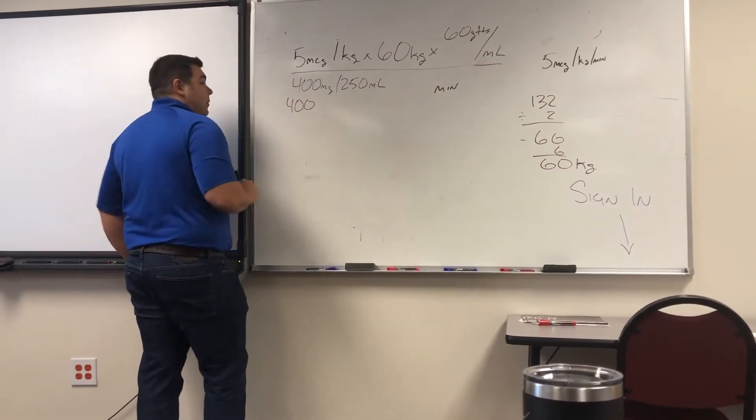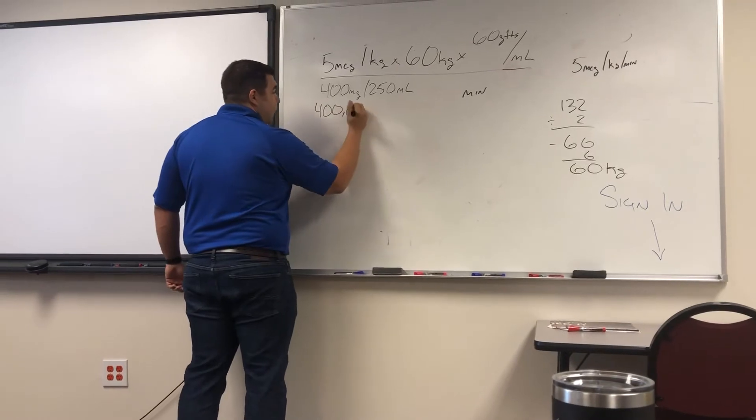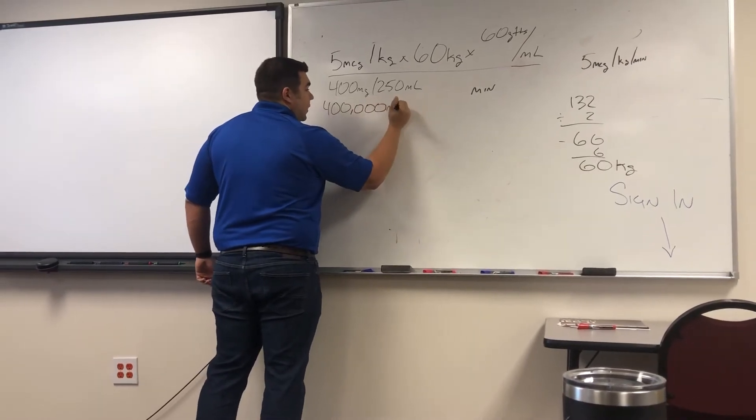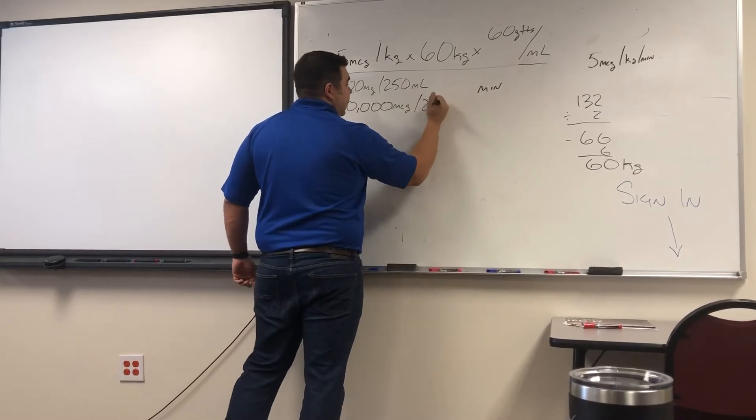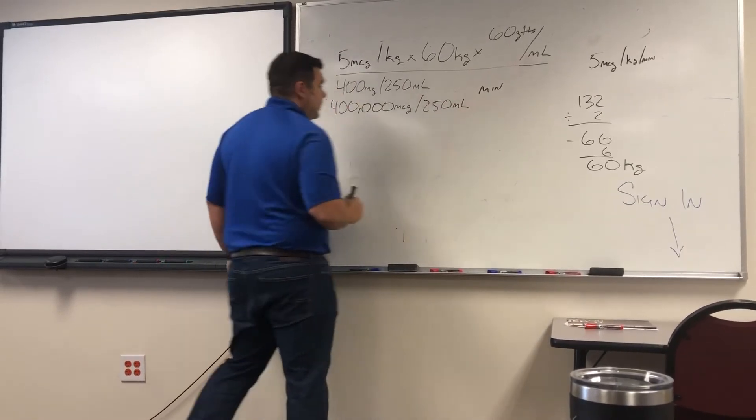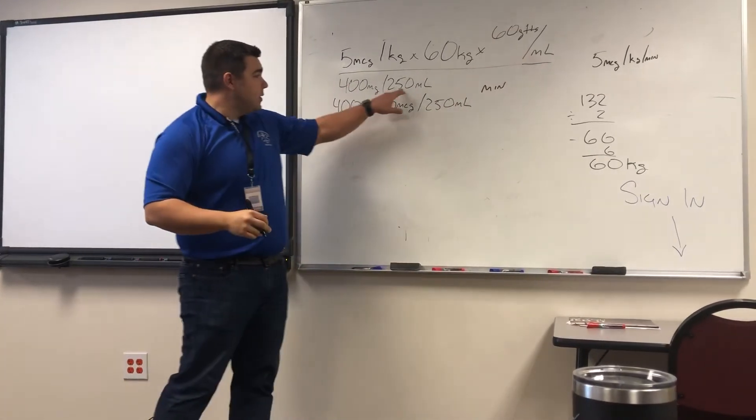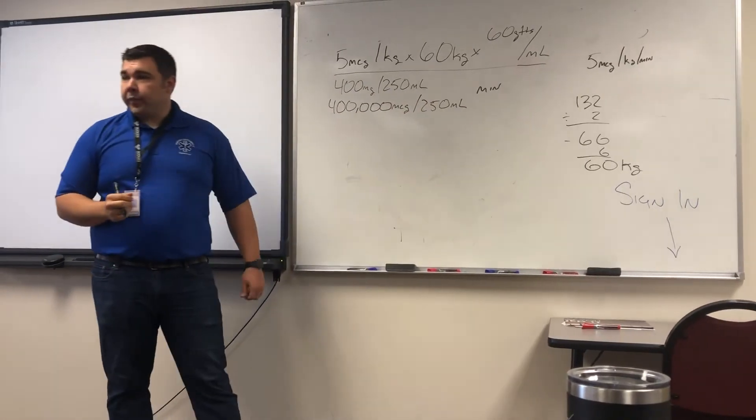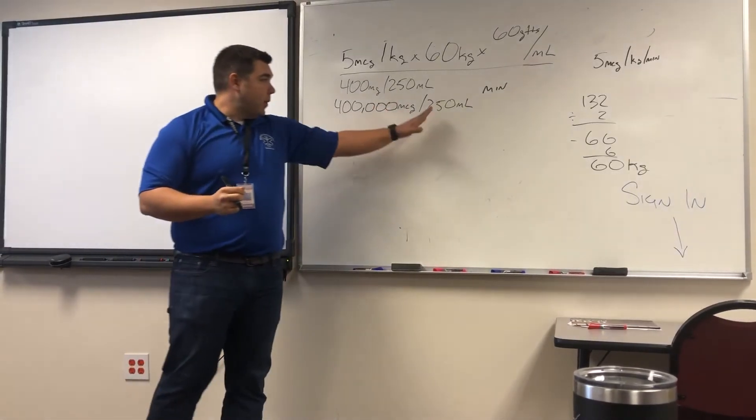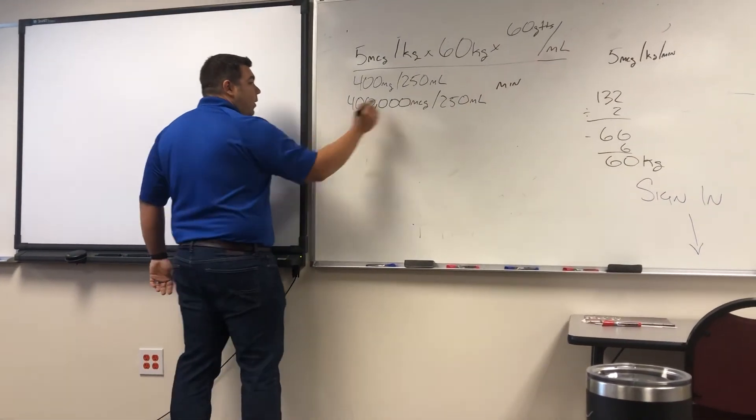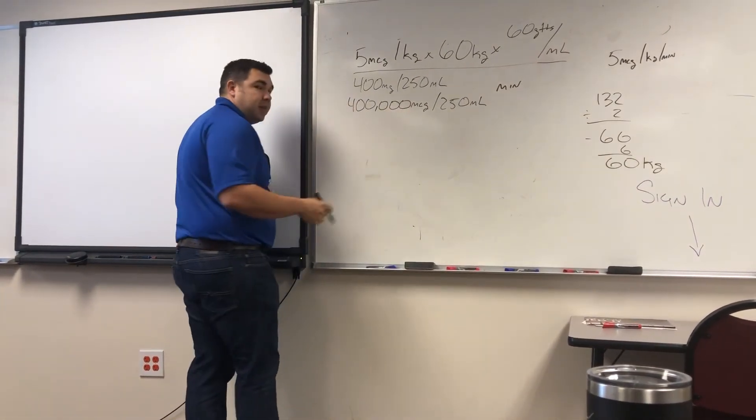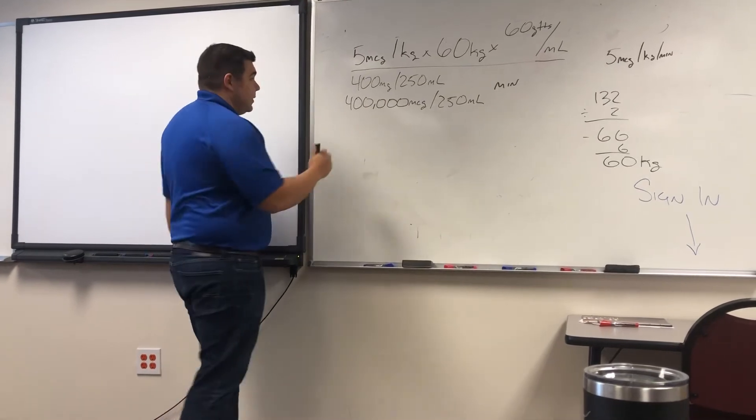So 400 milligrams is how many micrograms? 400,000. 400,000 micrograms. That's 1,600. And 250 milliliters. So how do I reduce this down to 1 ml? Divide by the right side here, the denominator, 250 mls. So 400,000 divided by 250. I know you guys already know what your head is. 1,600. 1,600.